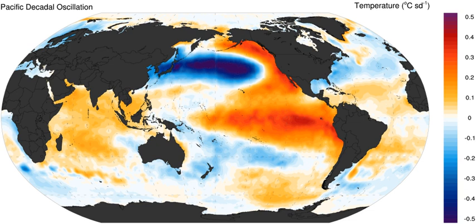This climate pattern also affects coastal sea and continental surface air temperatures from Alaska to California. During a "warm" or "positive" phase, the West Pacific becomes cooler and part of the Eastern Ocean warms. During a "cool" or "negative" phase, the opposite pattern occurs.